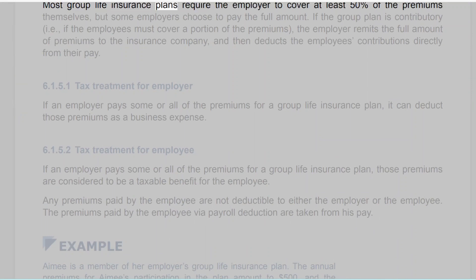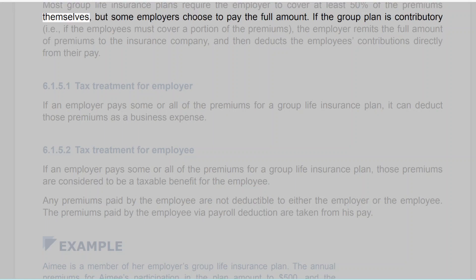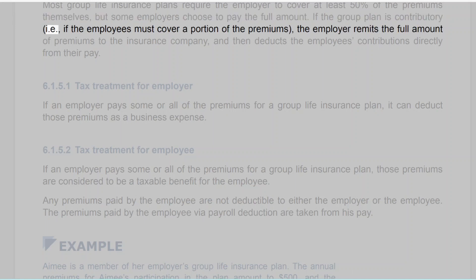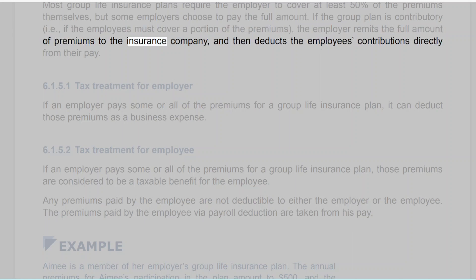Most group life insurance plans require the employer to cover at least 50% of the premiums themselves, but some employers choose to pay the full amount. If the group plan is contributory — i.e., if the employees must cover a portion of the premiums — the employer remits the full amount of premiums to the insurance company and then deducts the employee's contributions directly from their pay.